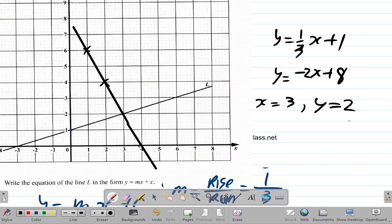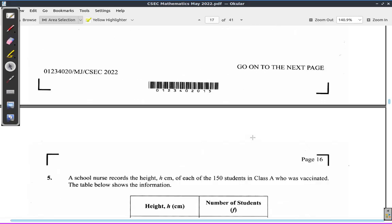This intersection is at x equals 3, y equals 2. So that's the solution (3, 2). I will see you in the next video when we move on to Question 5.